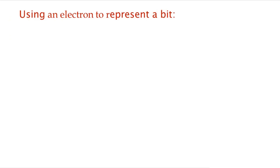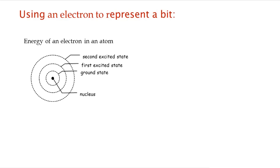Let's suppose that we want to represent a bit using the state of an electron. Let's recall something: the energy of an electron in an atom is quantized. What it means is that, let's say you have a hydrogen atom — the electron is not allowed to take on any old energy. It's in one of several discrete orbitals with one of several discrete energy levels. For example, it's allowed to be in the ground state, or the first excited state, or the second excited state, and so on, depending upon how high its energy is allowed to be.